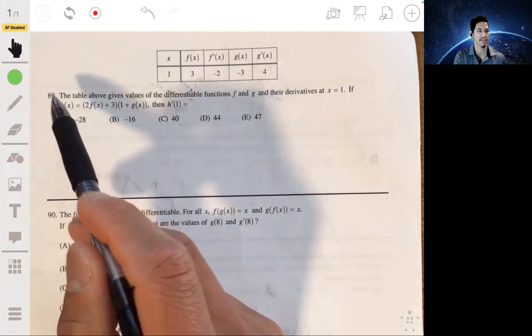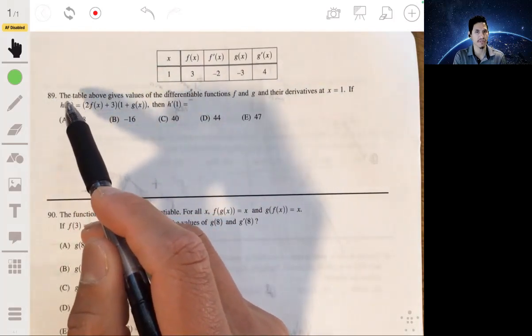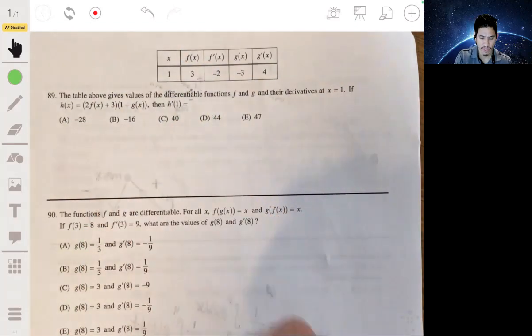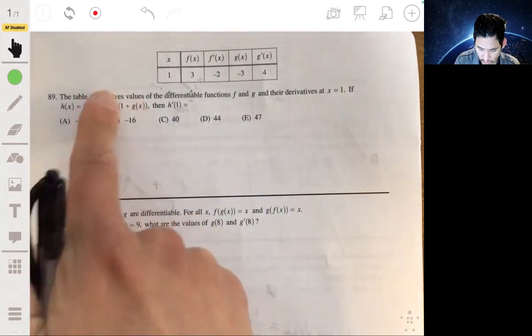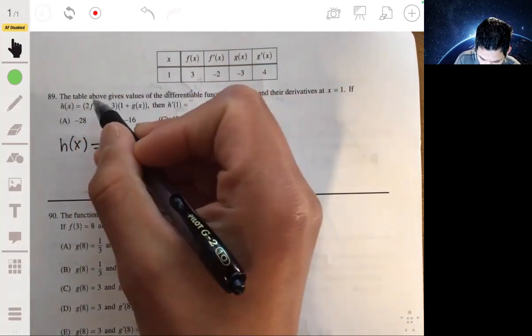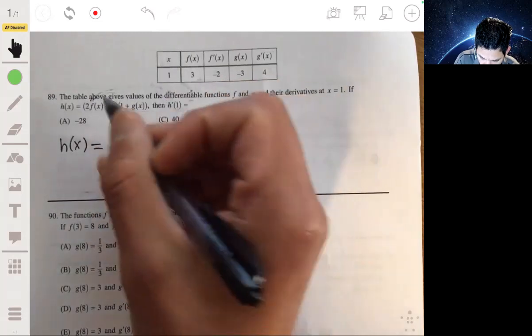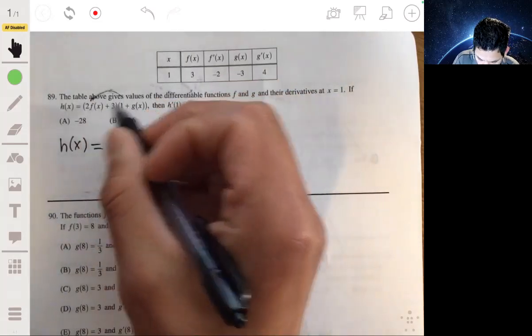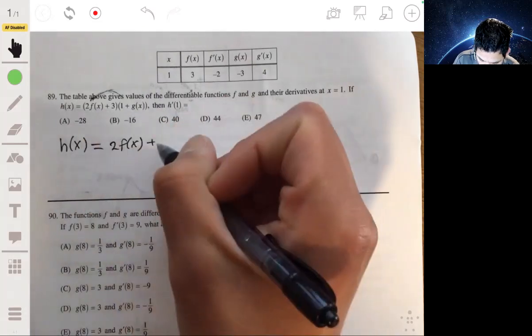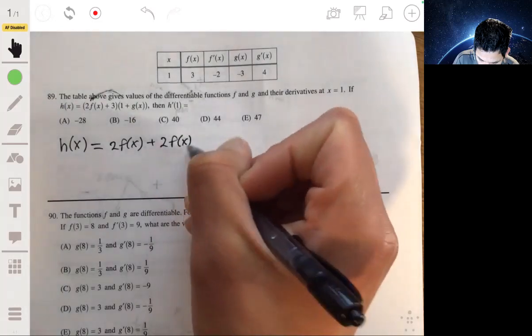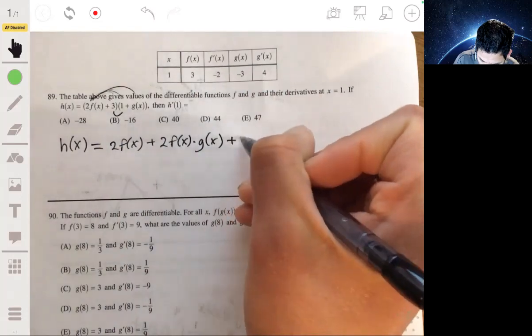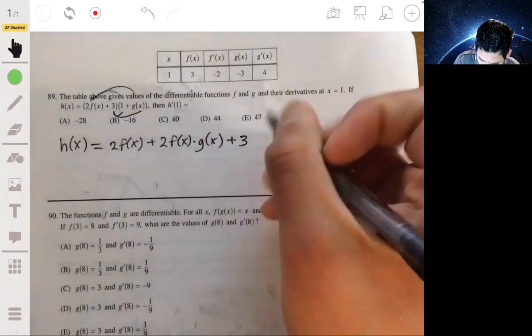We want to find just the equation for h prime in general, and all we've got to do is plug in 1 for x. So what I like to do or what I recommend is just multiplying this out first just so it's easier to work with. So just distributing, just basic algebra, 2 times f of x times 1, 2 f of x plus 2 f of x times g of x plus 3 plus 3 g of x.